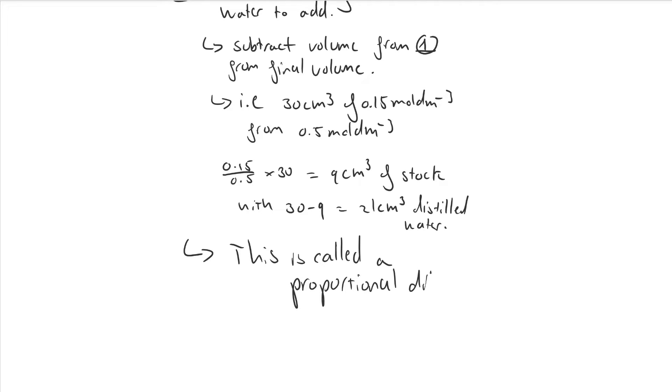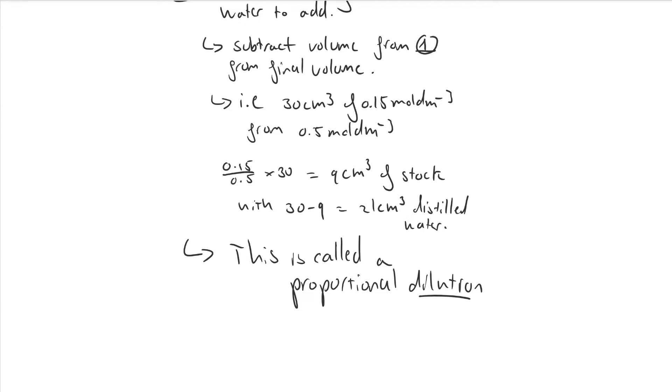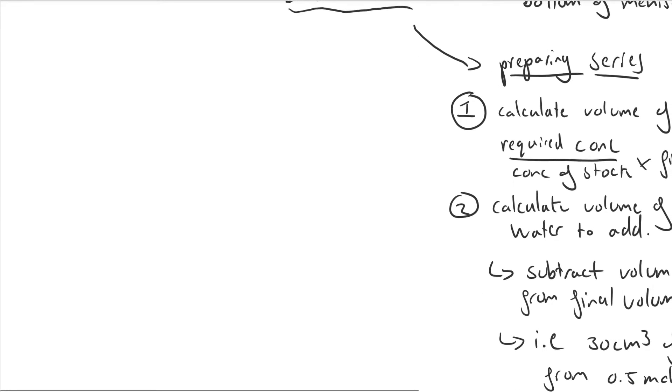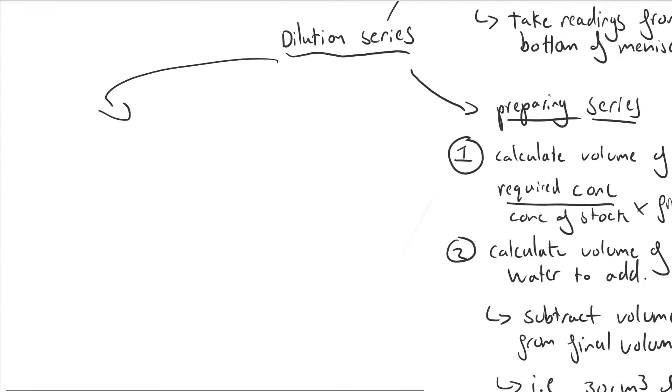Now another type of dilution you may need to know is a serial dilution, which comes up occasionally. This can be carried out using different dilution factors, and I'm going to describe how to dilute by a factor of 10.